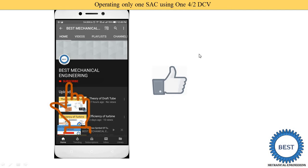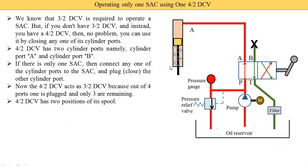For more videos of circuit designs, the link is provided in the description as well as from the card. The card is the I symbol on the top right of your screen — I have put various playlists of subjects there so you can watch more videos.